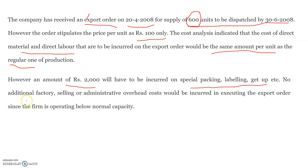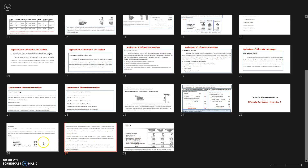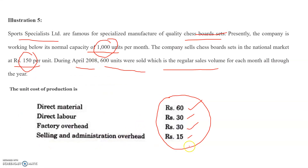No additional factory, selling, or administrative overhead cost would be incurred for the export order. The selling and factory overhead per unit of Rs. 45 applies only to the national market.